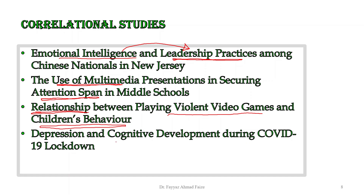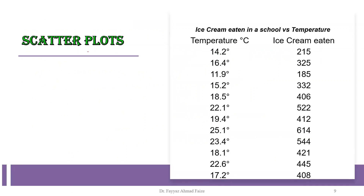The last example is depression and cognitive development during COVID-19 lockdown. This is a simple and brief topic. The two variables are depression and cognitive development. The researcher will measure these two variables through different types of tests or scales, then determine if these two variables are correlated to each other.